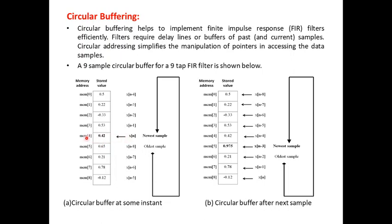For example, x of n at memory location 4 is where we need to obtain a newest sample. Hence, the pointer pointing to x of n minus 3 at memory 5 with the value of 0.975 alone is written,